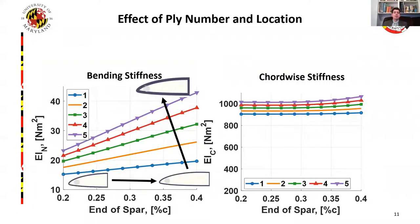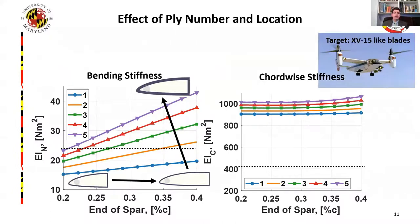Here we see the results of the study. Along the x-axis is the width of the spar as a percentage of chord length, and the y-axis shows the two bending stiffnesses — normal and chord. Each line represents an increasing number of plies in the spar. Overlaying the target properties, we find that while we can accurately select the normal bending stiffness, with our material choice we cannot reach the target chord stiffness of 400 Nm². This is acceptable, however, because the dominant motion of prop rotor blades is normal bending due to lift generation, known as flap. We select a design with two plies ending at 33% chord for the final spar geometry.